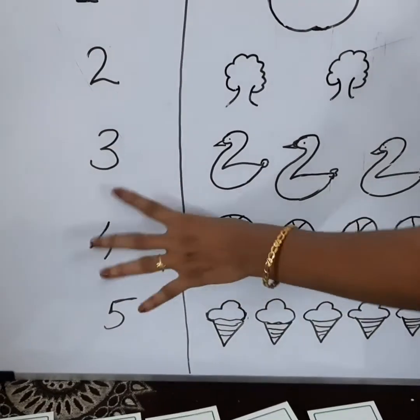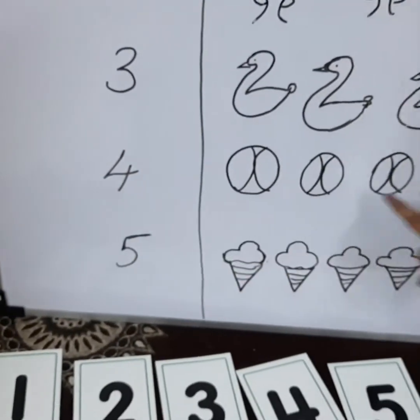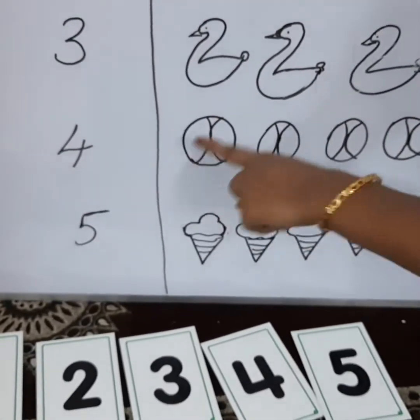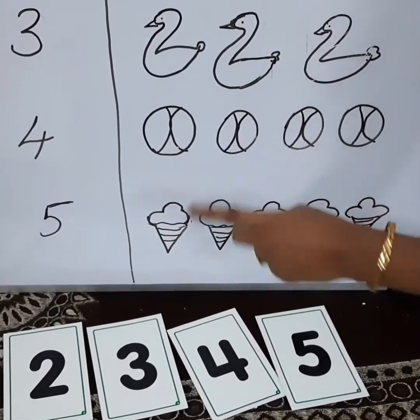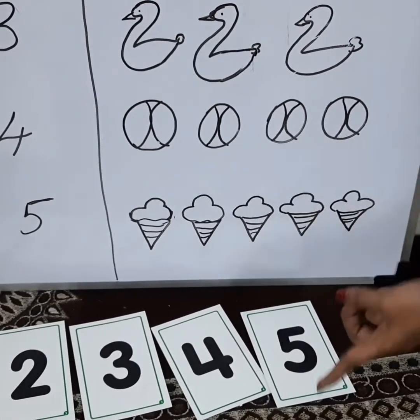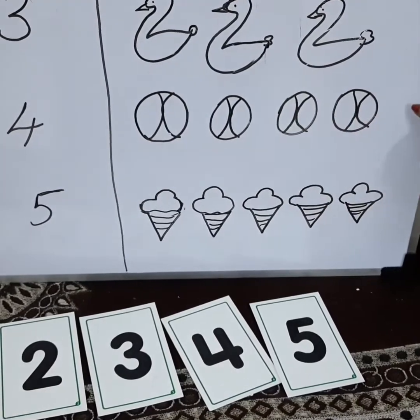What is the next number? It is 4. After 3, it is 4. What is this? Many balls are here. We will count. 1, 2, 3 and 4. Total 4 balls are here.